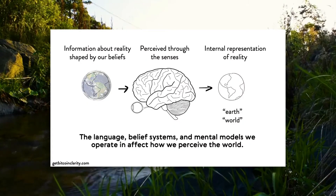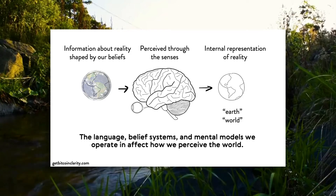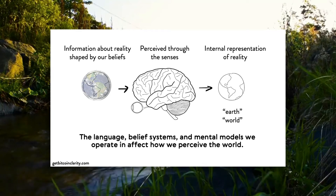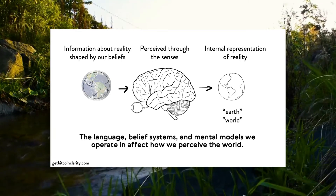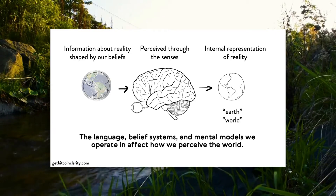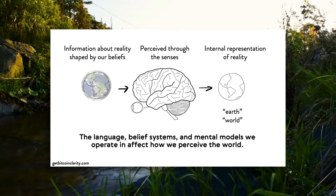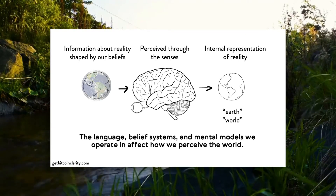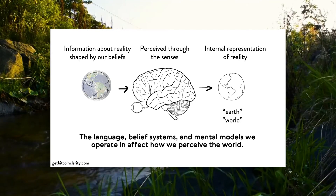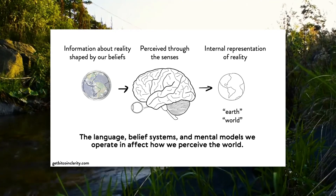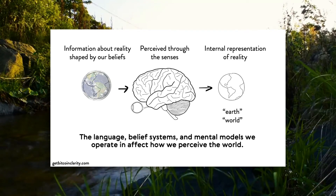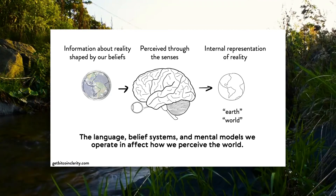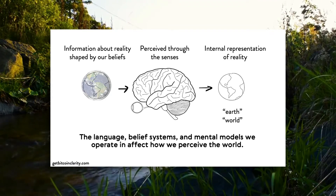The language, belief systems, and mental models we operate in affect how we see and perceive the world. Information about reality is shaped by our beliefs, passed through our senses, and then we reinforce this internal representation of reality. For example, people used to believe the world was flat. When they looked out at the horizon, they saw it as flat, which reinforced their belief. Now we have maps of the world as round, and that internal representation has shifted.